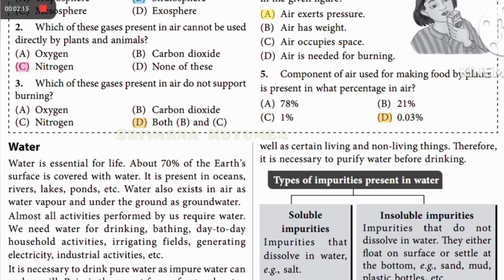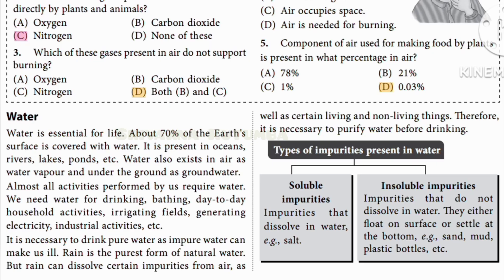There are two types of impurities: soluble impurities and insoluble impurities. Soluble impurities dissolve in water, so you cannot usually see them easily — they are hard to notice at first. Insoluble impurities do not dissolve in water; they either float on the surface or settle. Examples include sand, mud, and oil. These are easier to notice as they don't mix into the water.